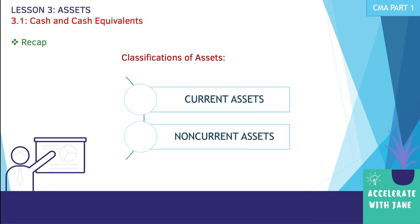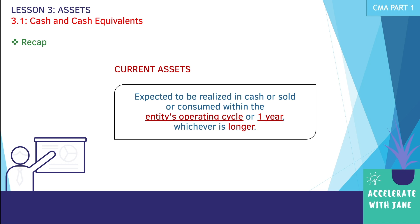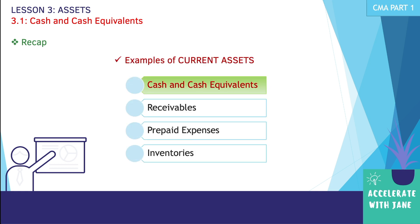We have two classifications of assets: current and non-current. Current assets are expected to be realized in cash or sold or consumed within the entity's operating cycle or one year — whichever is longer. I highly suggest watching Lesson 1, Section 1 of CMA Part 1 where I discussed the concept of the operating cycle. Examples of current assets include cash and cash equivalents, receivables, prepaid expenses, and inventory.